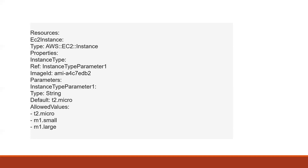In some examples you might see parameters defined above the resources — it doesn't matter, we can define them anywhere. The most important thing is the ref function. You can see the ref over here: instance type ref, instance type parameter one. By placing parameters near the beginning, another person can easily understand what parameters are defined for a particular resource.